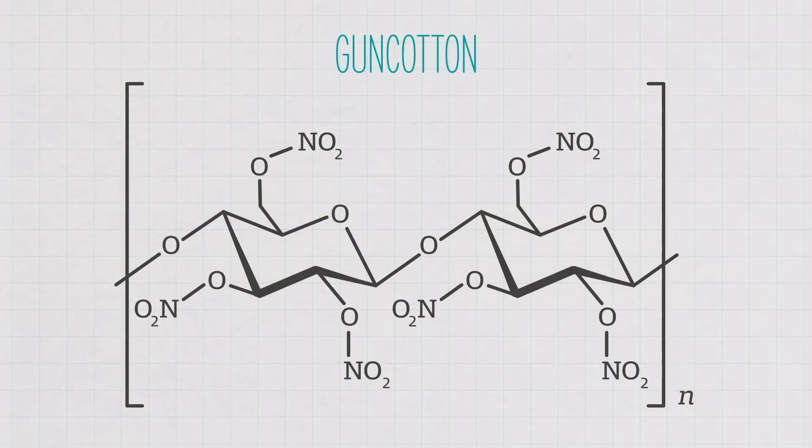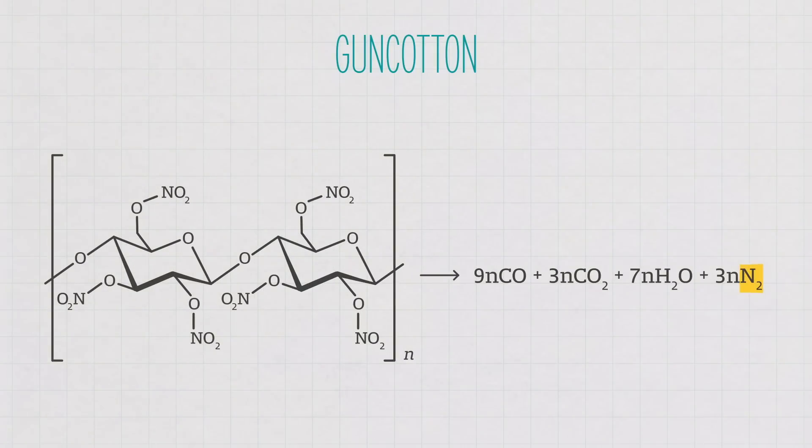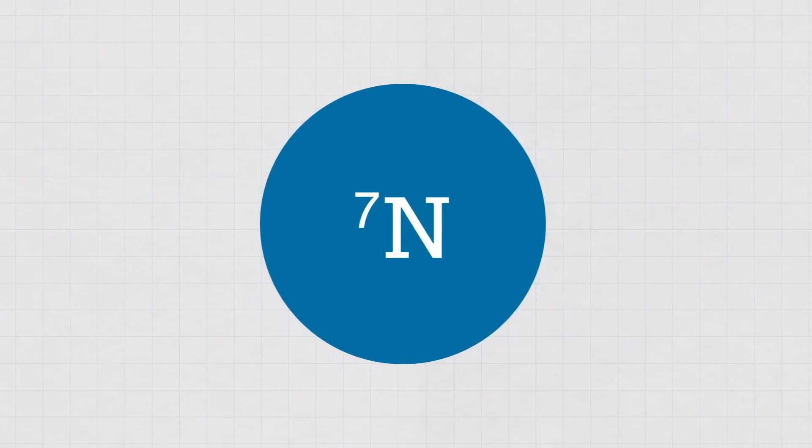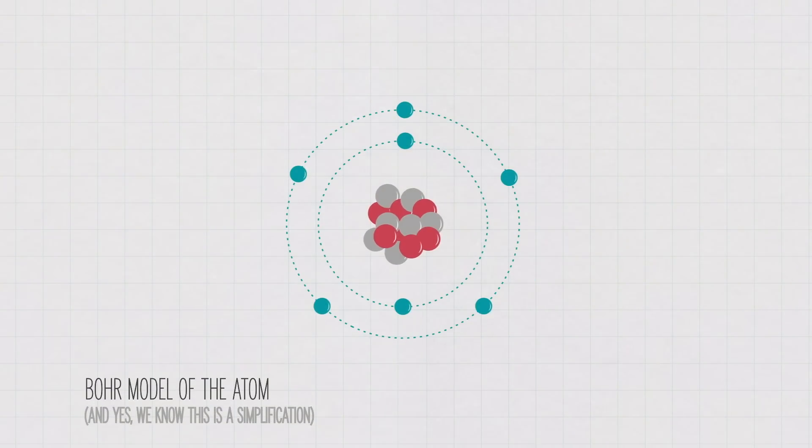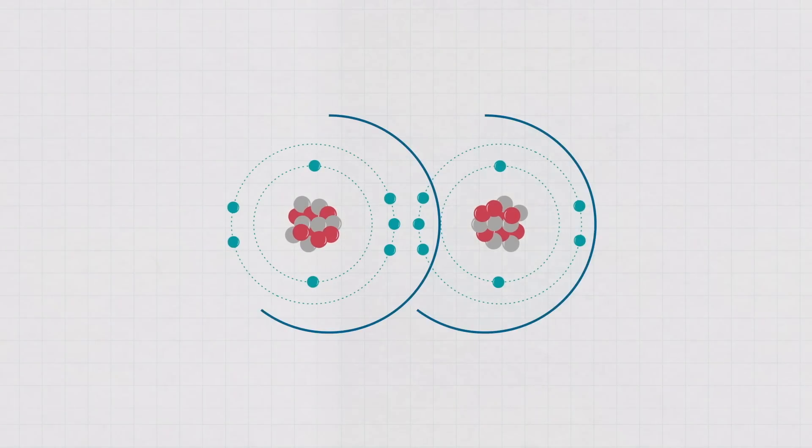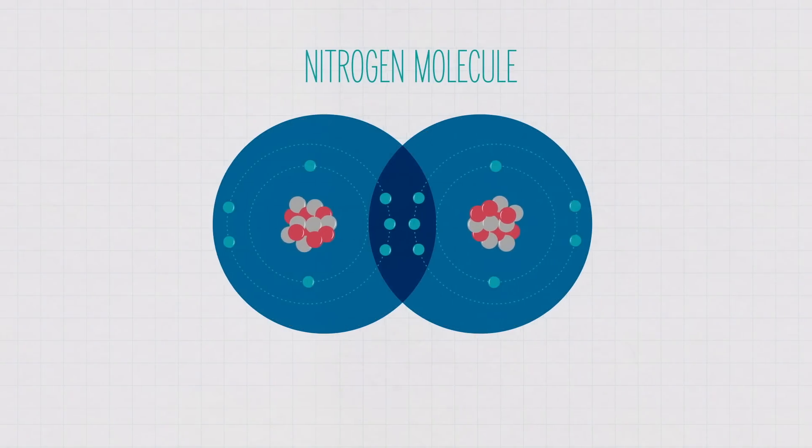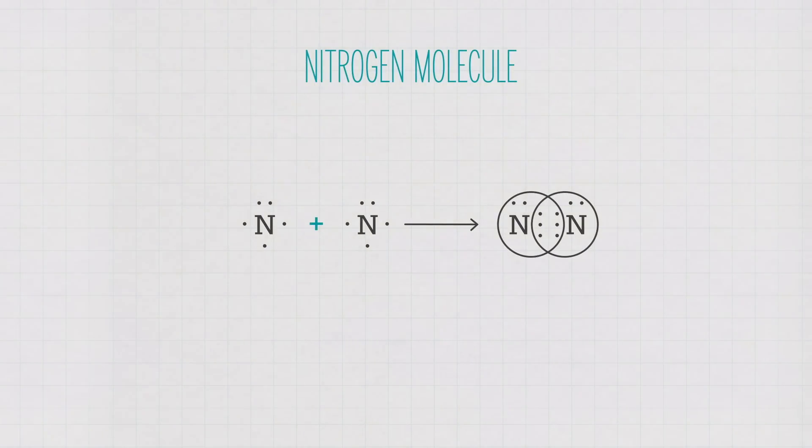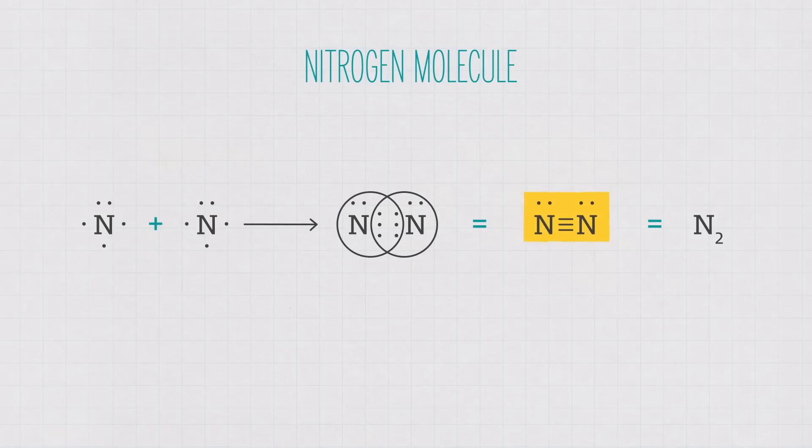The key to guncotton's explosivity is all of these nitro groups. These groups are relatively unstable, while the gases that result from their decomposition, like nitrogen, are very stable. When we talk about chemical stability, what we're really talking about is how many electrons they have. Remember from our episode on red tides that electrons exist at set distances from the nucleus of an atom. Each of these distances is called a shell, and each shell has a specific number of electrons that it's able to contain. If it has fewer electrons, it wants to fill them by reacting with another atom, creating a bond and sharing their electrons so that both of their shells are filled. Nitrogen is an important product of guncotton decomposition, and its stability comes from the three bonds that hold the nitrogen atoms together. When these bonds are formed, all of the nitrogen atom's outermost shells are filled with electrons. This makes it very stable.